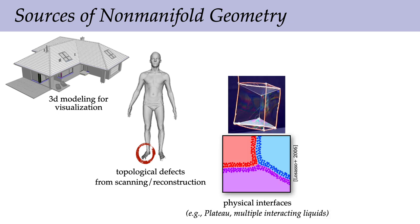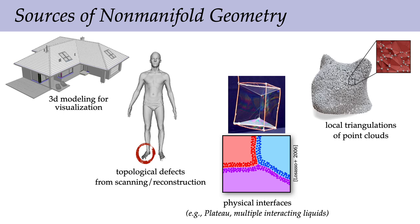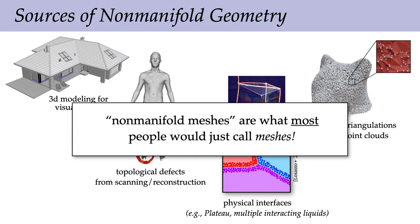There are also times when the phenomenon you're studying truly is non-manifold — physical interfaces between multiple liquids, foams, where you have this non-manifold meeting of different pieces. And triangulations we want to associate with point clouds can be extremely non-manifold. For a lot of good reasons, non-manifold meshes are what most people would just call meshes. This idea of working only with manifold meshes is kind of an academic idea. When you get out there in the real world, we really want to solve this general case and work on all possible kinds of data.